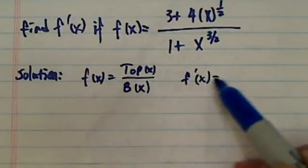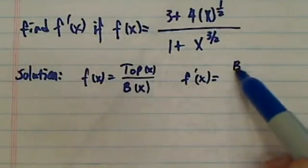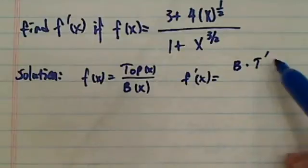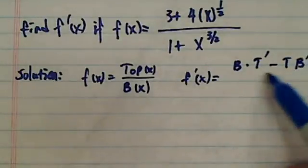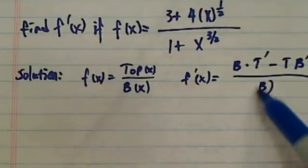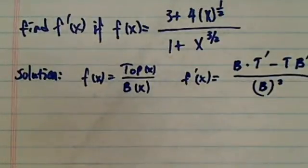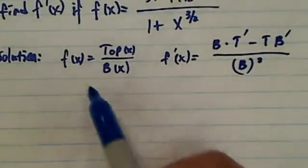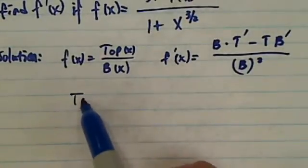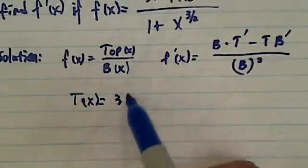f prime, you've got to know: B doesn't change, then top primed, minus top doesn't change, bottom prime, divided by B bottom squared. Okay, so the best thing to do to keep track of what you're doing is actually separate each one. So top function is equal to 3 plus x to the half times 4.